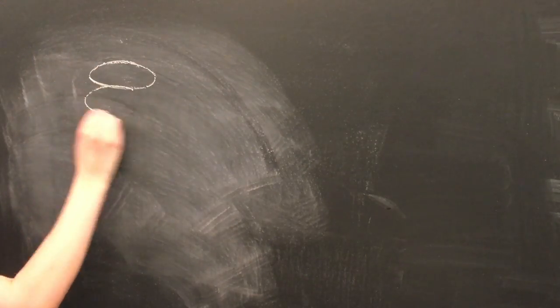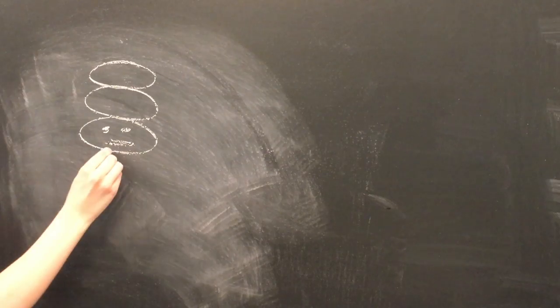After all this two-dimensional modeling, you may be wondering, well, what if we have more than two notes? What happens there? We can't model triads on the Mobius strip. And you're right.